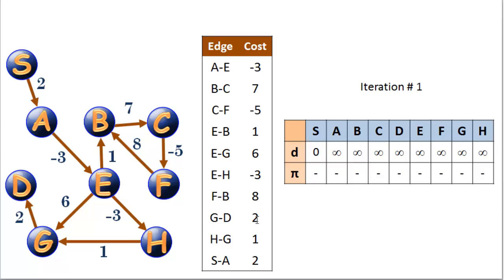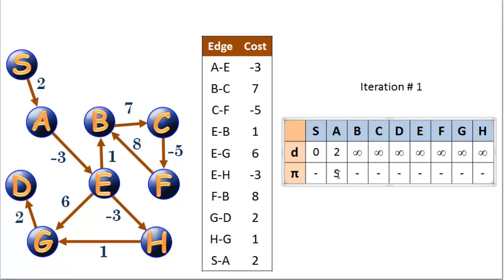So in the first iteration, the only thing that really makes any difference are outbound edges from vertex S. We have edge S to A with a cost of 2, meaning we can now get to A with a distance of 0 plus 2 = 2, and the predecessor to A is S. So we found a path to A from S with a cost of 2. That's all we found in iteration 1.